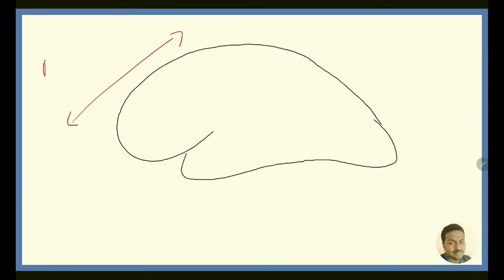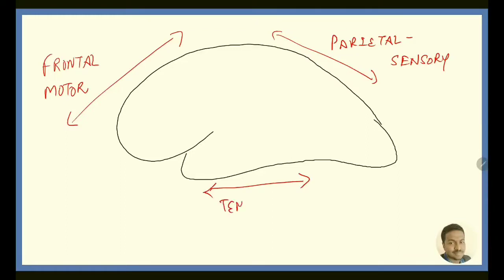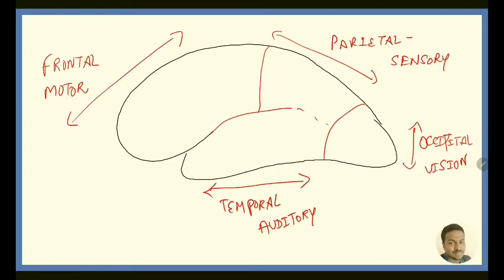One important thing about all the lobes is the frontal lobe is concerned with motor activity. The parietal lobe is concerned with sensory activity. The temporal lobe is associated with auditory pathways and the occipital lobe with vision. Whatever Brodmann area that is falling in the frontal lobe are of motor, whatever that is falling on the parietal are sensory areas, and the areas in temporal lobes are related with auditory pathways and entire occipital lobe is concerned with vision.